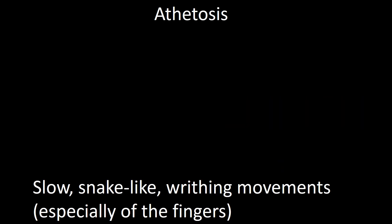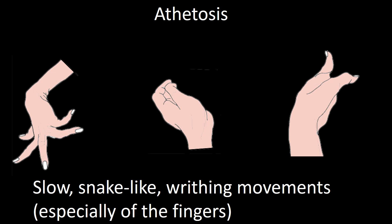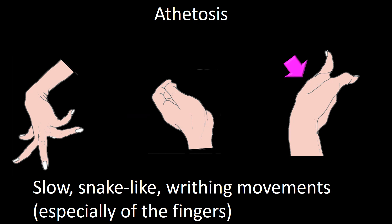Athetosis is defined as slow snake-like writhing movement, especially of the fingers. In this condition, the hand takes many different and unusual positions — with fingers extended, the thumb contracted, and extension of some fingers and flexion of others.